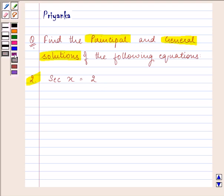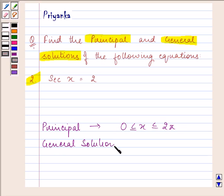Before proceeding, we must know that the principal solution will lie between 0 and 2π, whereas the general solution for cos x equals cos y implies x equals 2nπ plus or minus y, where n belongs to the set of integers.